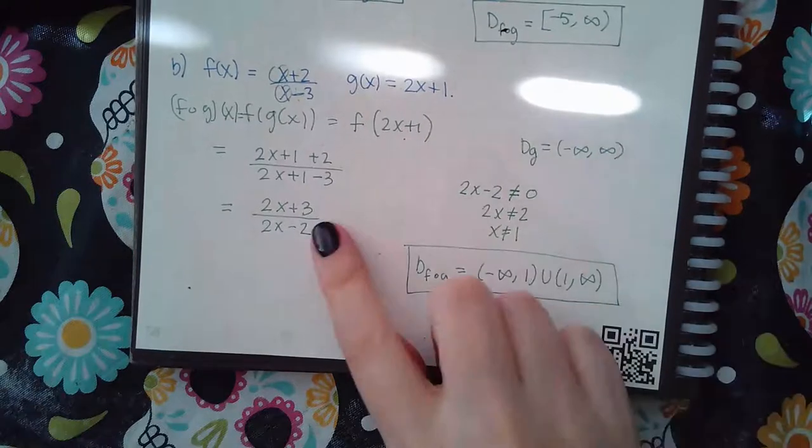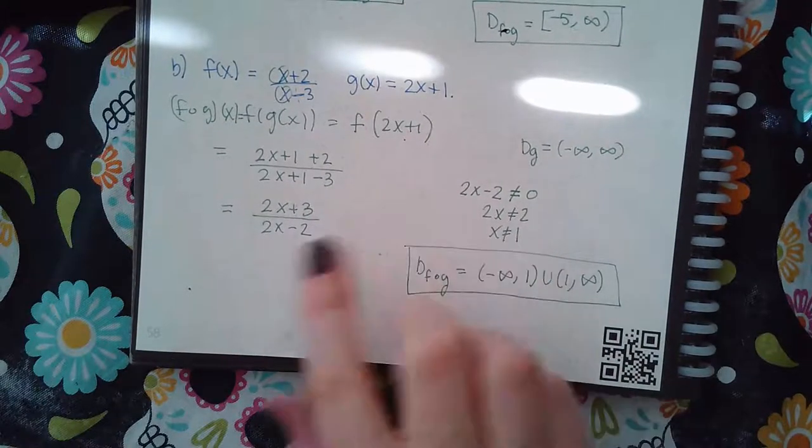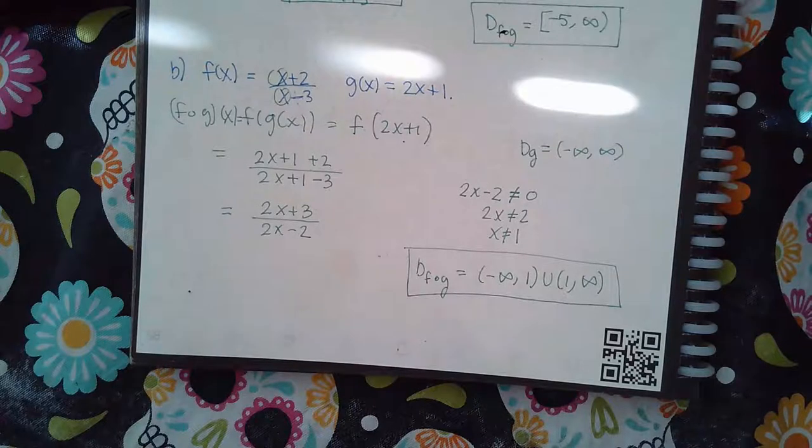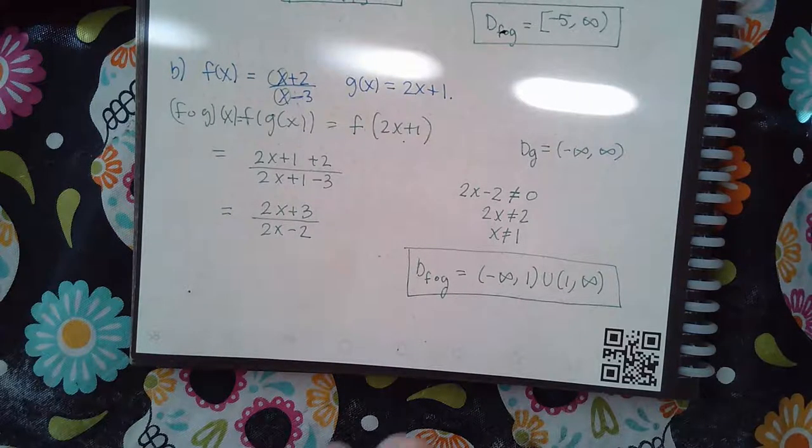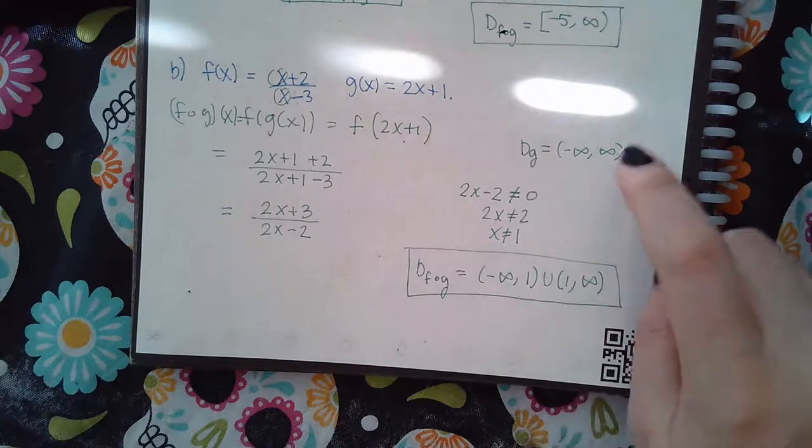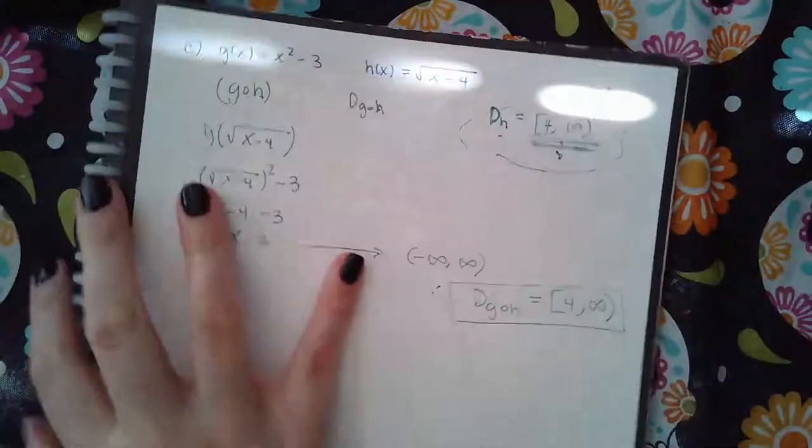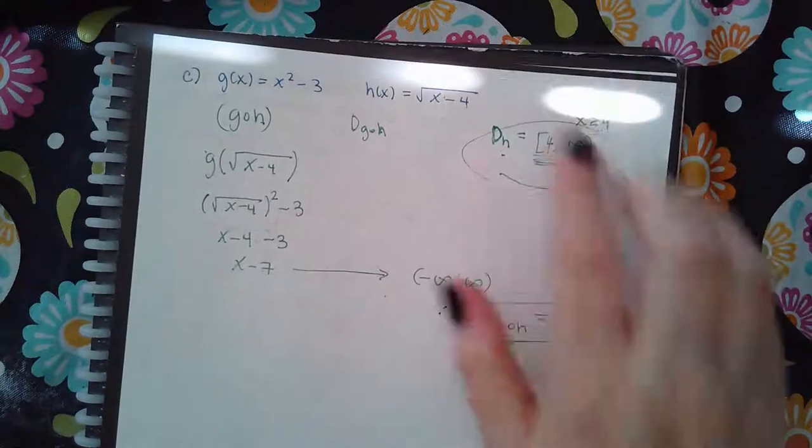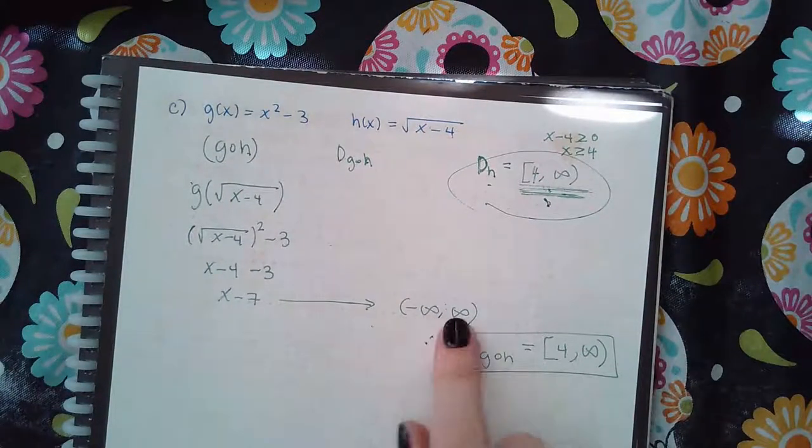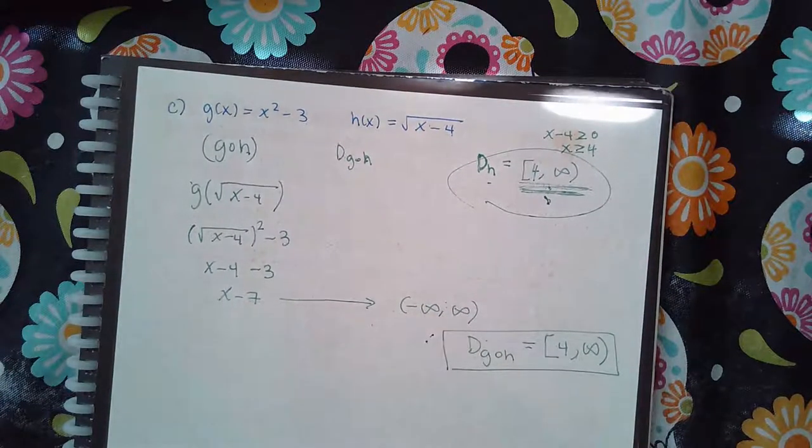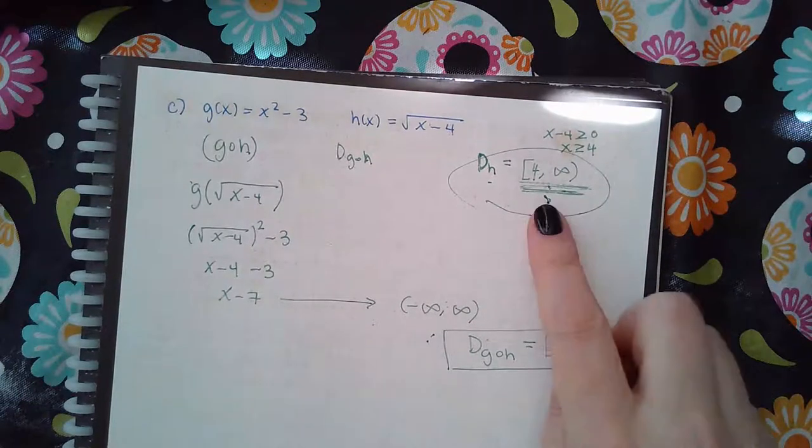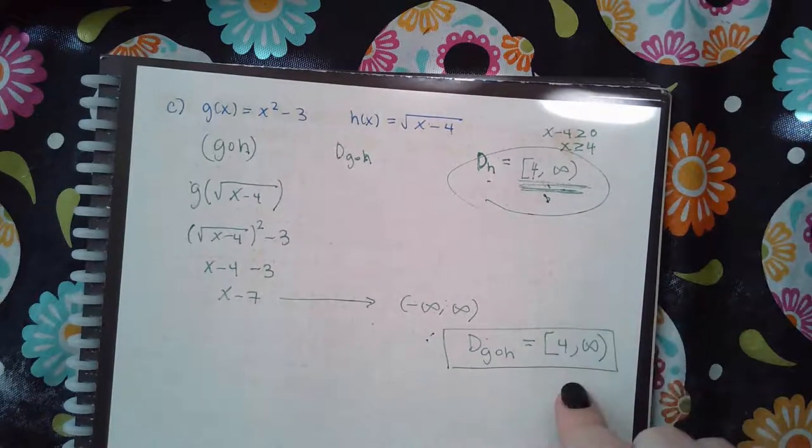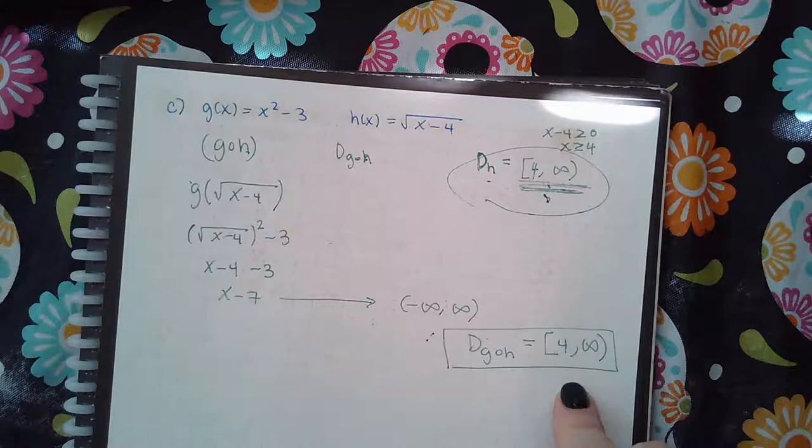But it just so happens that the x value one would have given me no output. So that's the one x value that needed to be removed from the potential domain. And so here, this is my potential domain, but I didn't get anything that needed to be removed from that potential domain, which means that that potential domain turned into my actual domain of g of h.